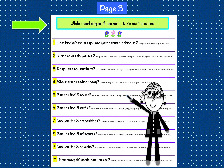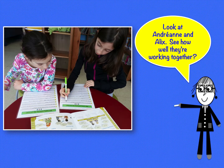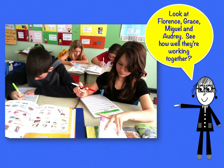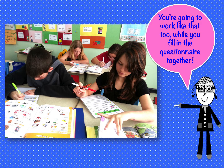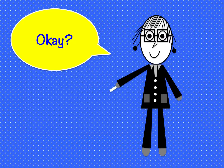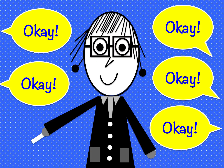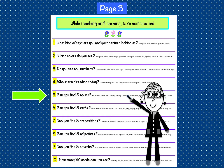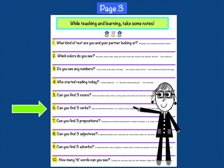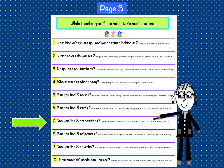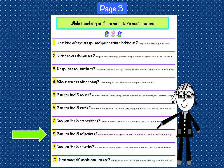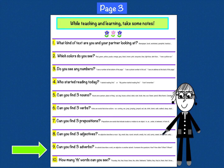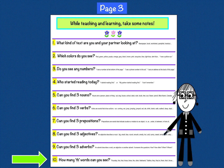Page 3: While teaching and learning, take some notes. Look at Andréanne and Alex — see how well they're working together? Look at Florence, Grace, Miguel, and Audrey — see how well they're working together? You're going to work like that too, while you fill in the questionnaire together. What kind of text are you and your partner looking at? Which colors do you see? Do you see any numbers? Who started reading today? Can you find three nouns? Can you find three verbs? Can you find three prepositions? Can you find three adjectives? Can you find three adverbs? How many TH words can you find?